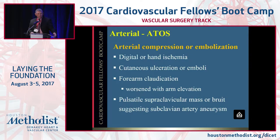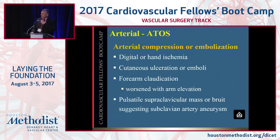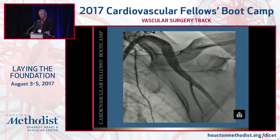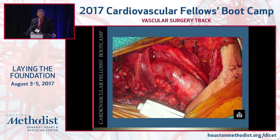How about ATOS, arterial compression? You can get digital or hand ischemia, cutaneous ulcerations, emboli, and forearm claudication. It's worsened with arm elevation. You can get a pulsatile mass in the supraclavicular space, which represents a subclavian artery aneurysm or post-dilatation of the artery related to compression at the costoclavicular space. Here's an example of an arteriogram showing dilation of the subclavian artery, which is obviously much bigger than normal — probably somewhere around 10 to 12 millimeters — and then what it looks like with an open incision.